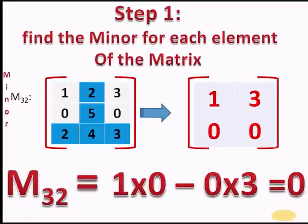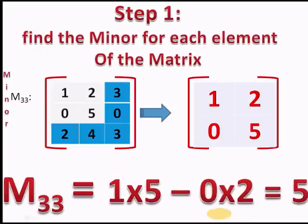For element A31, M31 is equal to minus 15. For element A32, M32 is equal to 0. For the last element A33, which lies in the third row and third column, we leave the third row and third column, leaving elements 1, 2, 0, and 5. The minor M33 equals 1×5 minus 0×2, which is 5.